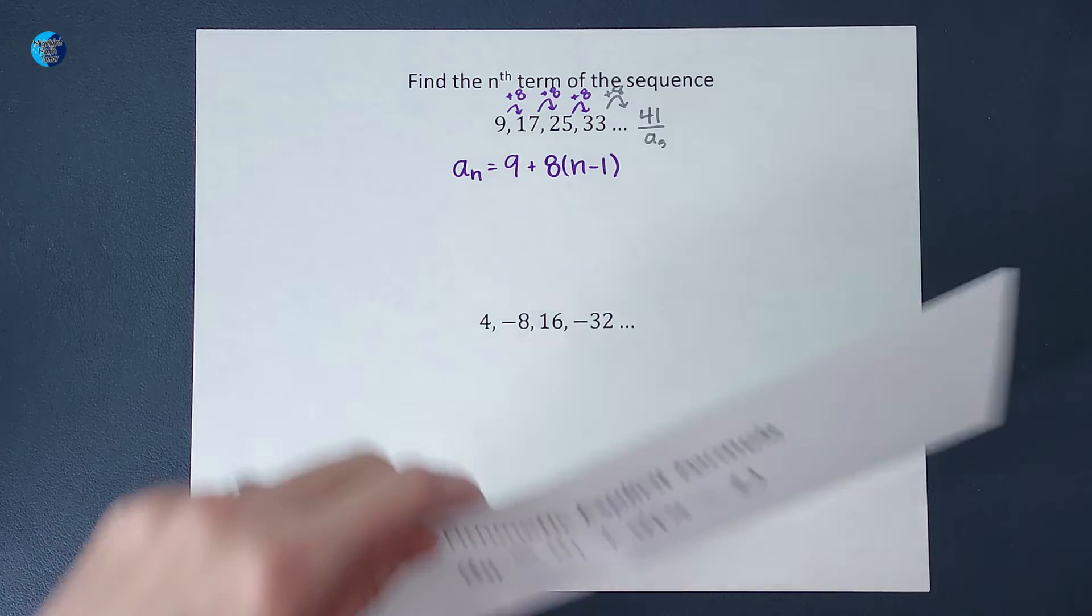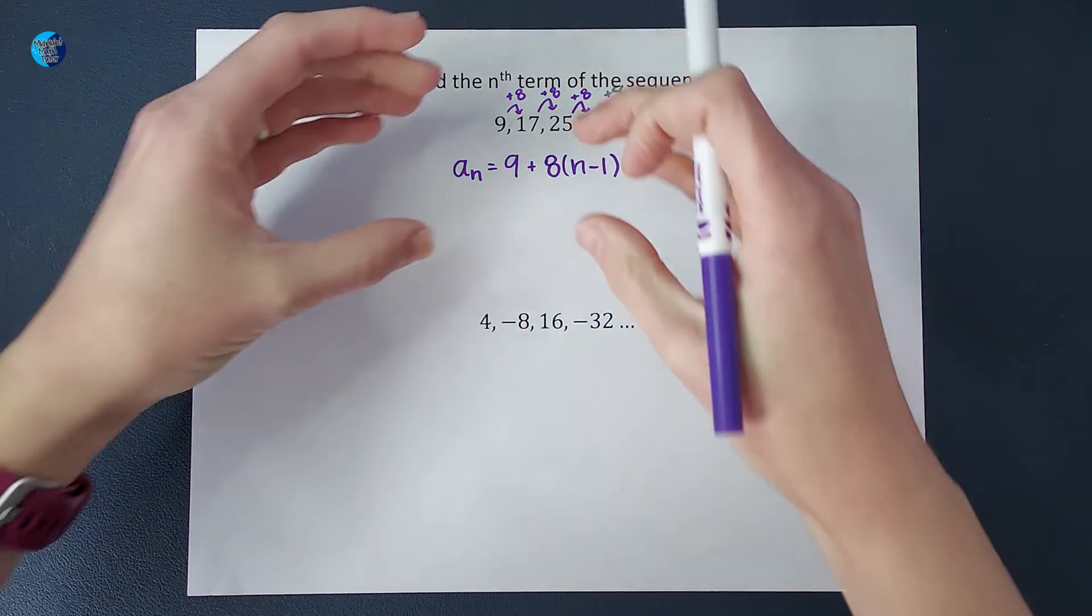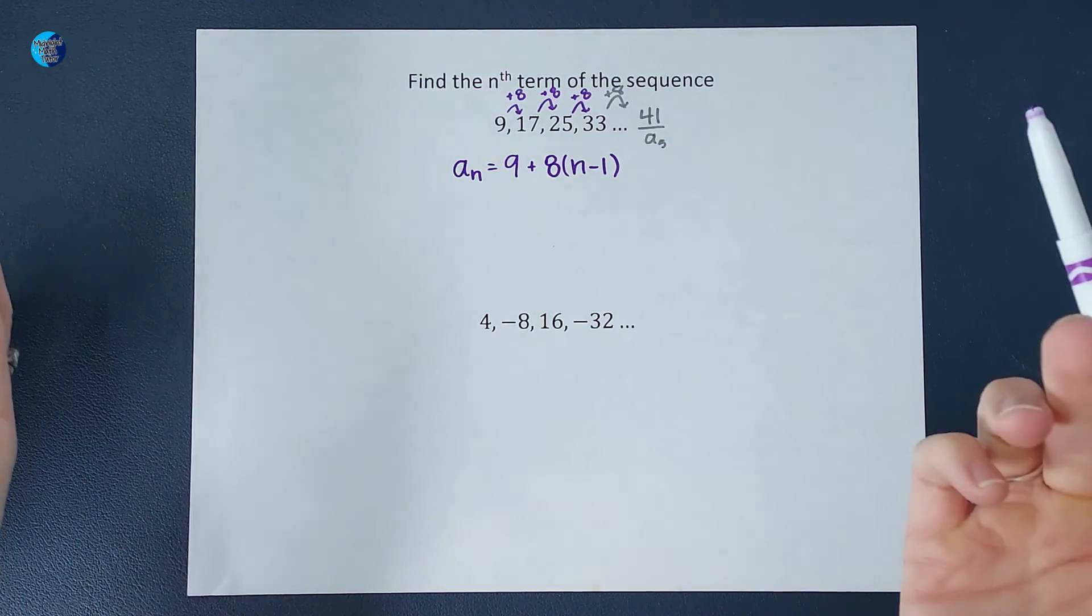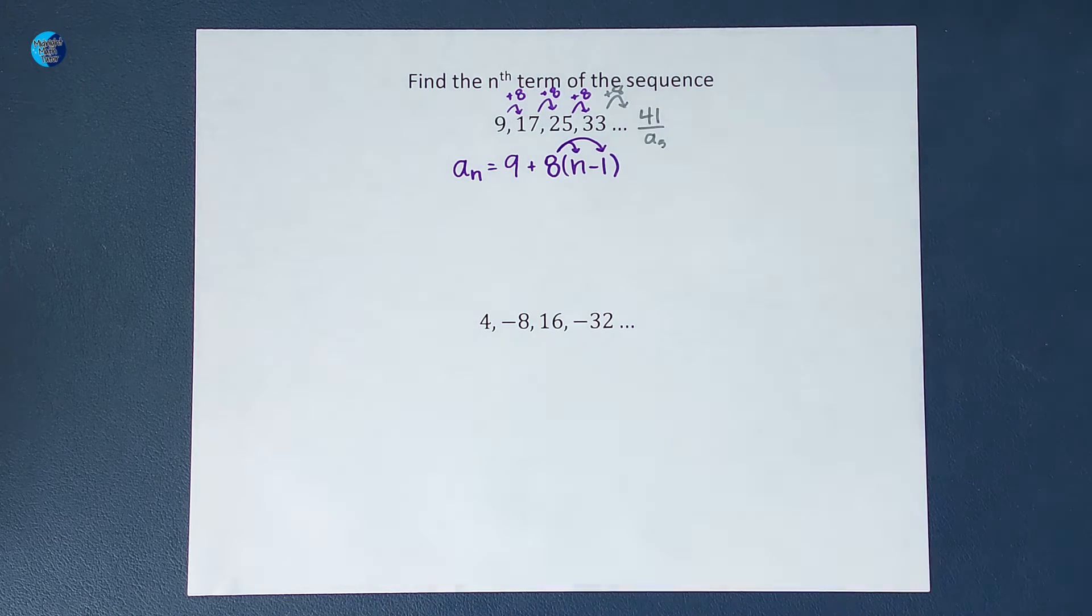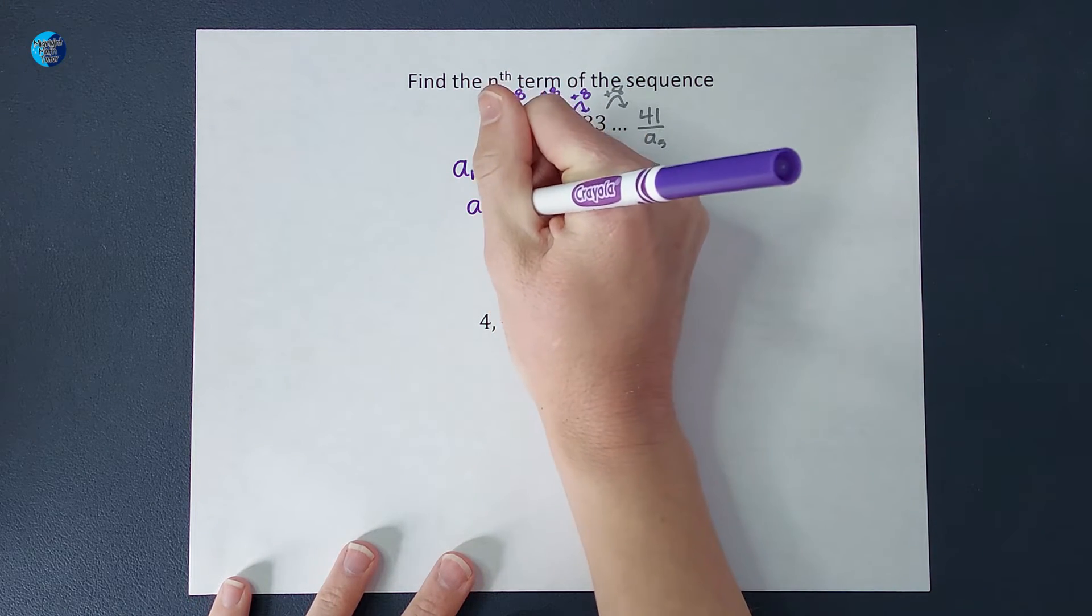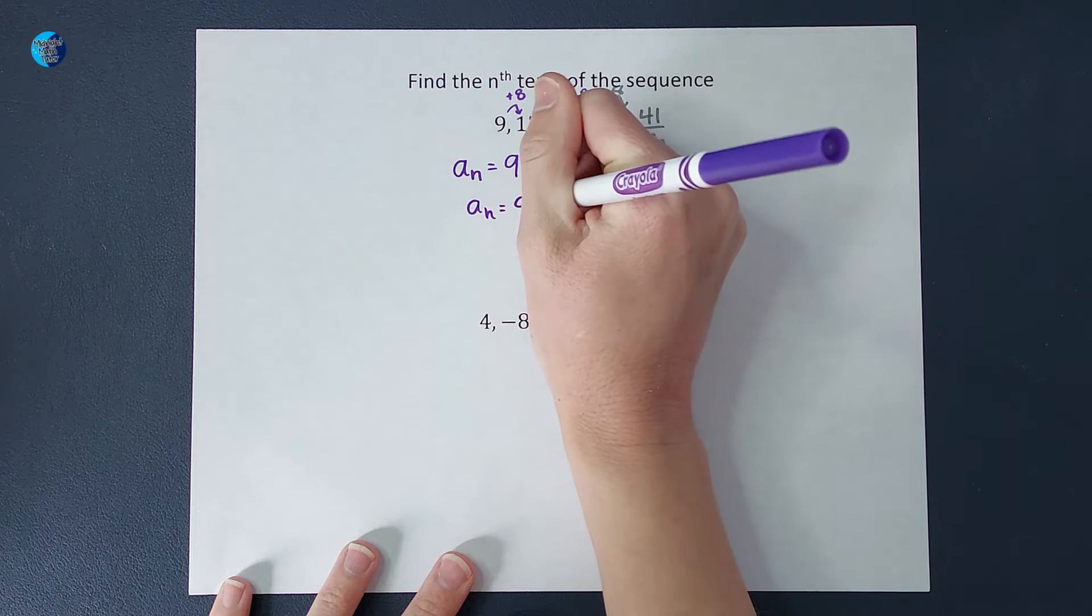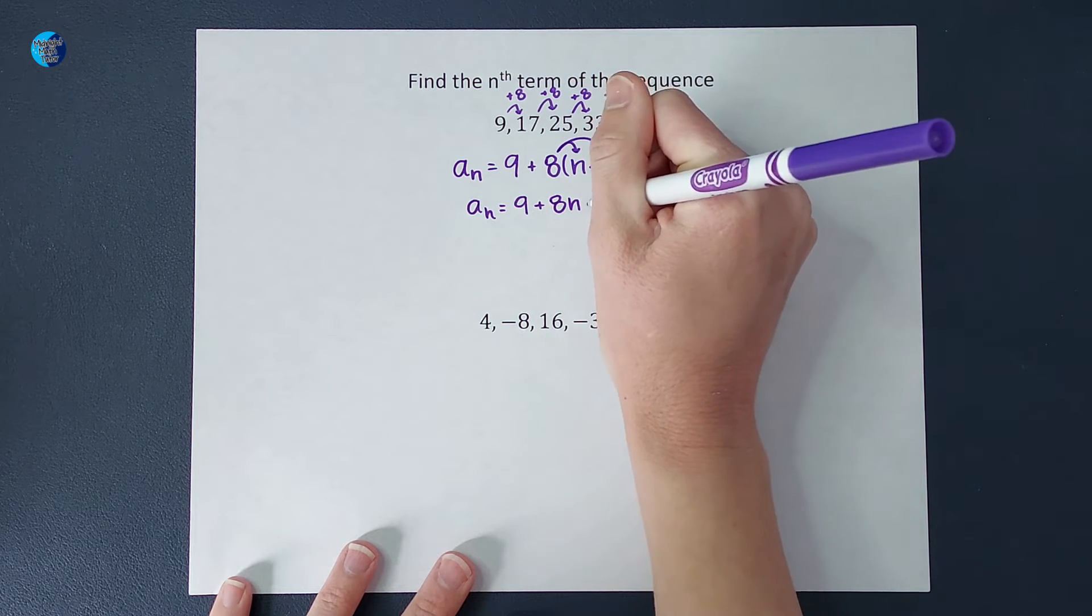Okay, guys, this is my formula. Now, some teachers might want you to get rid of those parentheses. So some might be good with you just leaving it like this. Some of them might want you to distribute that 8n to make it a bit more simple. So if I do that, I end up with a sub n equals 9 plus 8n minus 8.